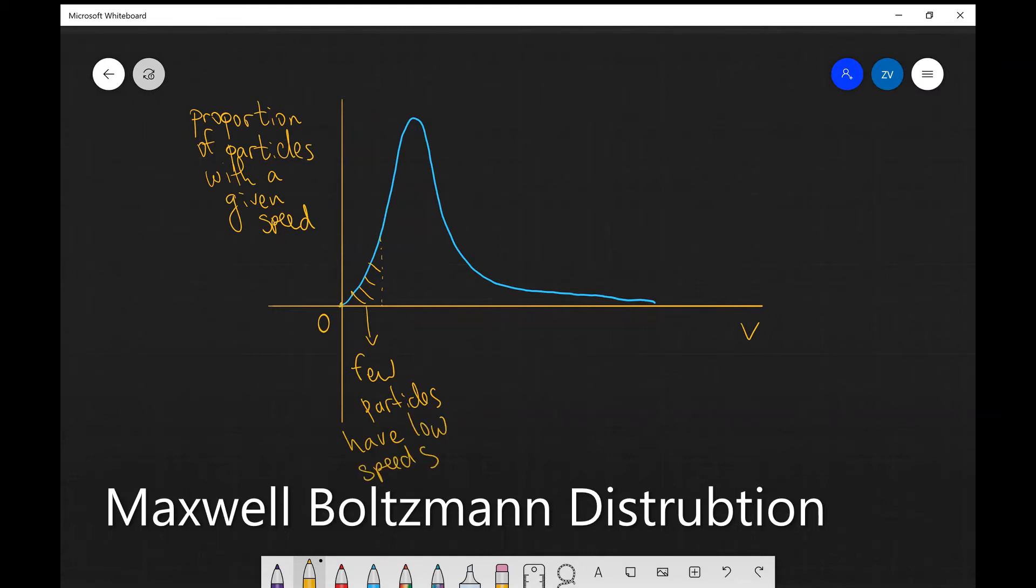Additionally, what we notice is that the vast majority of the particles, let's use a different color, will have moderate speeds.